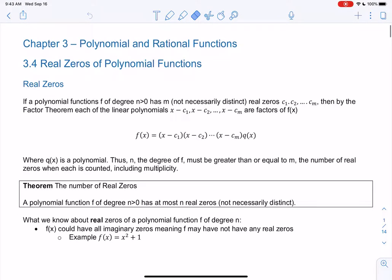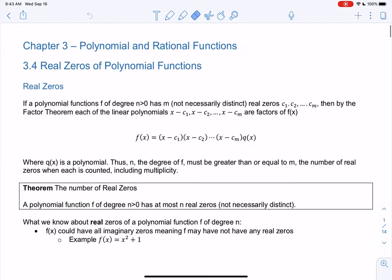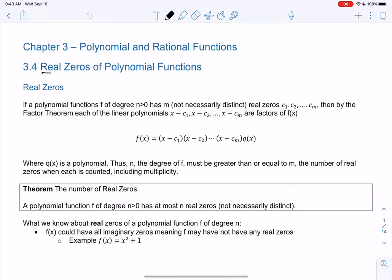All right, let's start section, continue chapter 3 with section 3.4, and we're going to find the real zeros of a polynomial function. So real zeros mean there are real numbers. So this gets rid of complex, the imaginary roots.